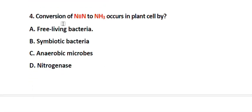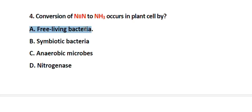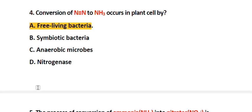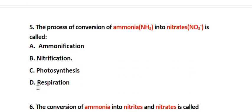Question number 4. Conversion of nitrogen to ammonia in plant cells occurs by: Option A. Free living bacteria, Option B. Symbiotic bacteria, Option C. Anaerobic microbes, Option D. Nitrogen. The correct answer is Option A. Free living bacteria.